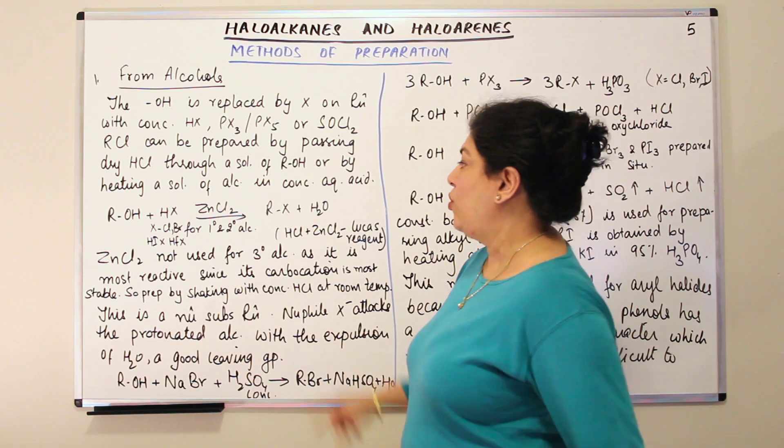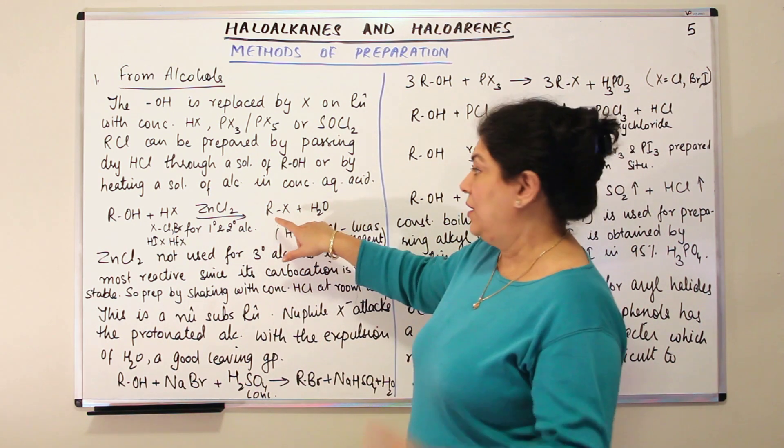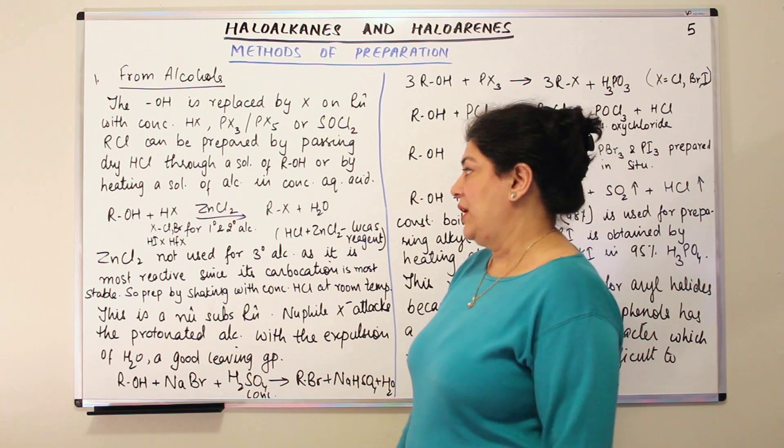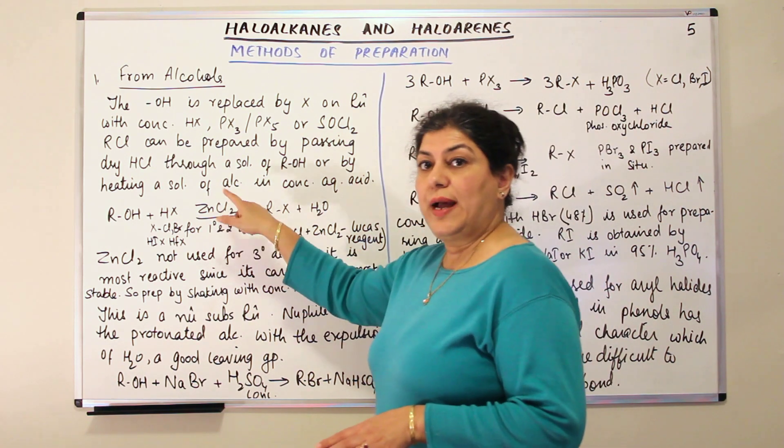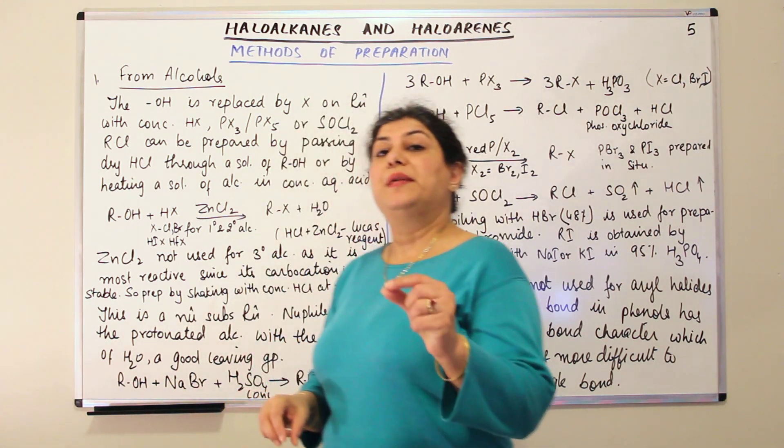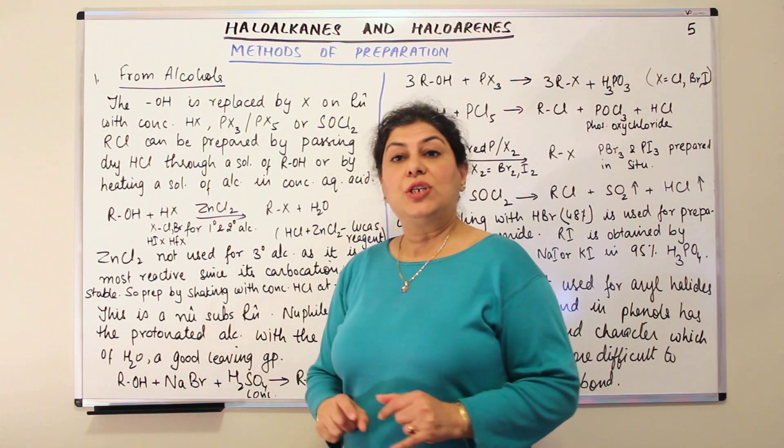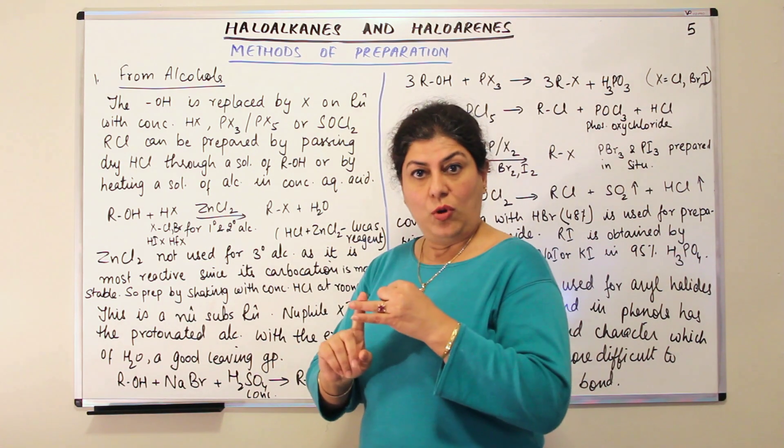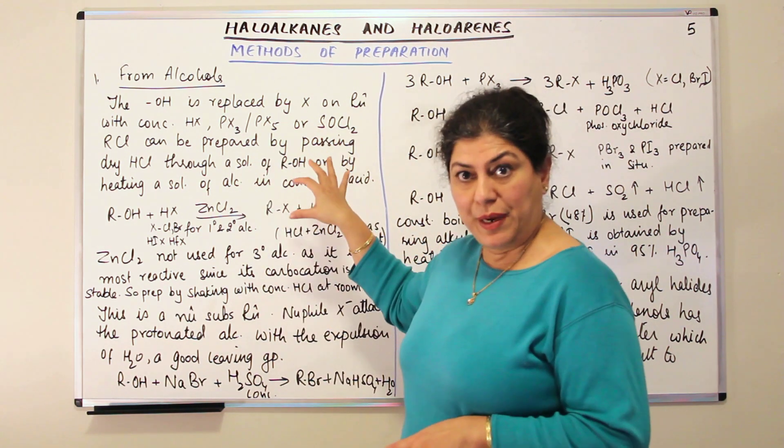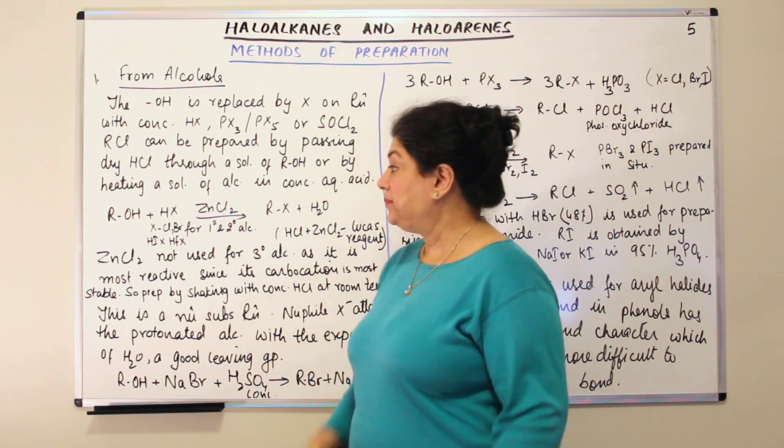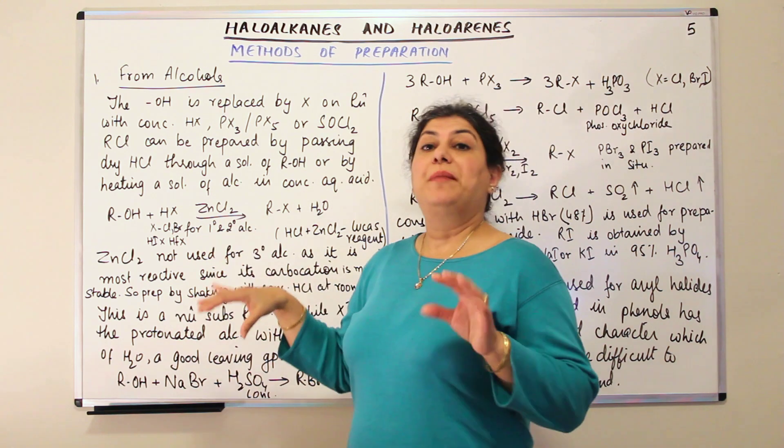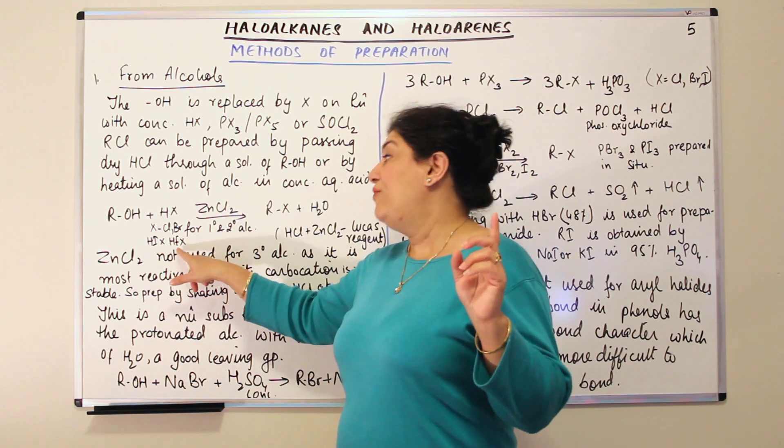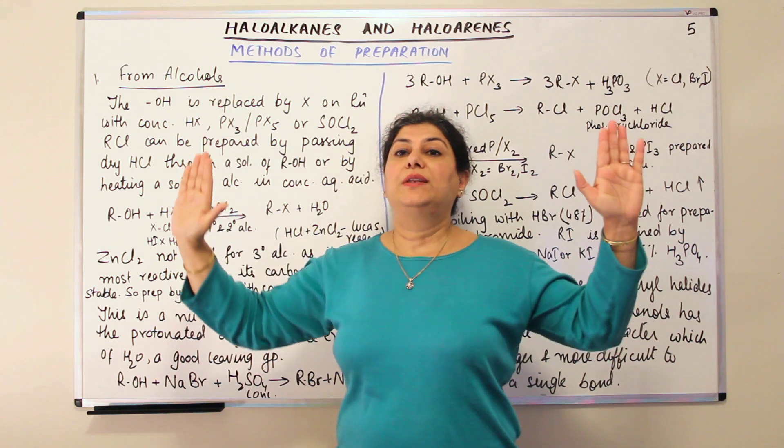So ZnCl2 helps in breaking up of the bond and the result of this reaction is the formation of RX that is the alkyl halide and water is given out. Now this zinc chloride with the acid is used only for primary and secondary alcohols. This is not a method that is used for tertiary alcohol. So what are the exceptions we are understanding? It is used only for primary and secondary alcohols which means primary and secondary alkyl halides can be prepared by this method. But tertiary alcohols cannot be prepared by this. Another thing is that this is a method which can be used to prepare the chlorides and bromides. It is not used for fluorides and iodides. And fluorides and iodides form the other two extremes.